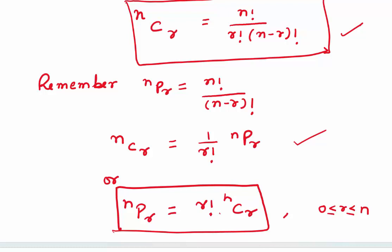Rearranging, NPR equals R factorial times NCR, where R is greater than or equal to 0 and less than or equal to N. This is why people say the number of permutations is always more than the number of combinations — NPR is R factorial multiplied by NCR.